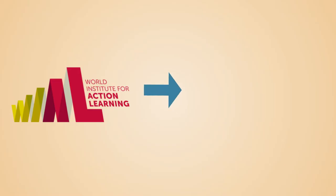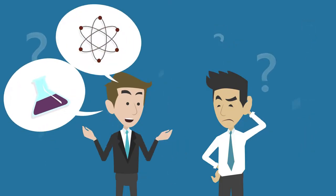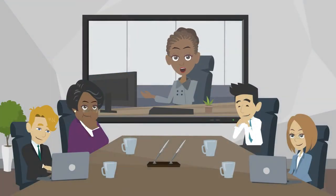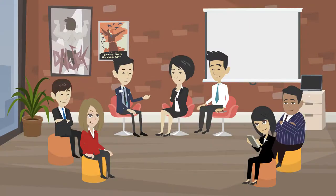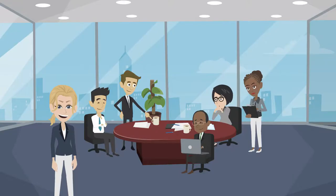Action learning has only two ground rules. The first is that statements can only be made in response to questions, and anyone can ask questions of anyone else. The second is that the coach has the power to intervene in the session to identify learning opportunities that will improve the group's ability to solve the problem and develop strategies.